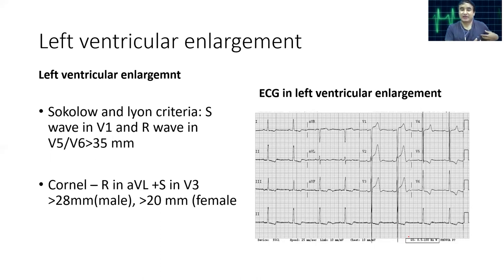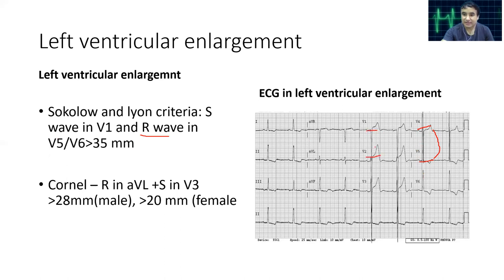In left ventricular enlargement, the vector is directed more toward the left ventricle. We calculate the amplitude of the R wave in V5 or V6 — whichever is larger — and add it to the amplitude of the S wave in V1. If this sum is more than 35 mm, we can diagnose left ventricular enlargement. This is called the Sokolow-Lyon criteria.